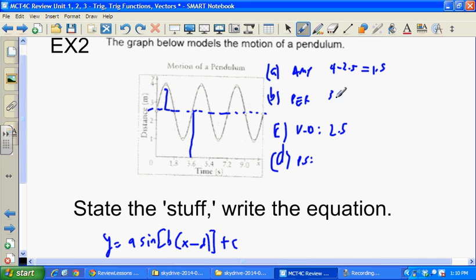The period, it repeats itself. It looks like every 3.6. So the period is 3.6. But what's the B value? Well, remember, 360 divided by B is the period. The last example, this ended up being 120 because B was 3. So how do I solve this? Well, cross multiply and divide. 360 divided by 3.6 is B, which means B is 100, believe it or not.